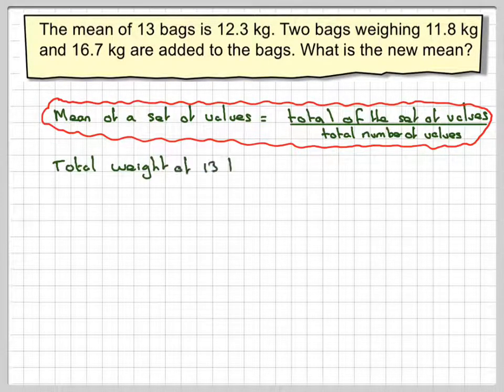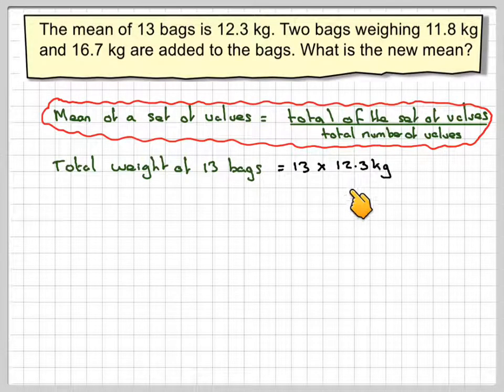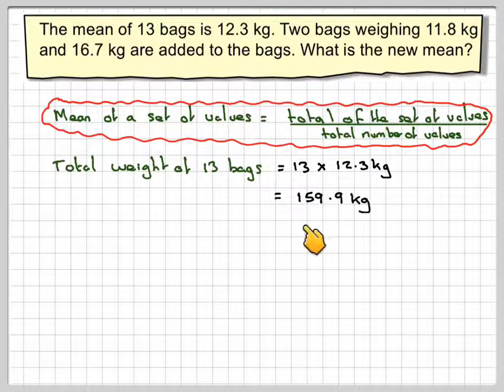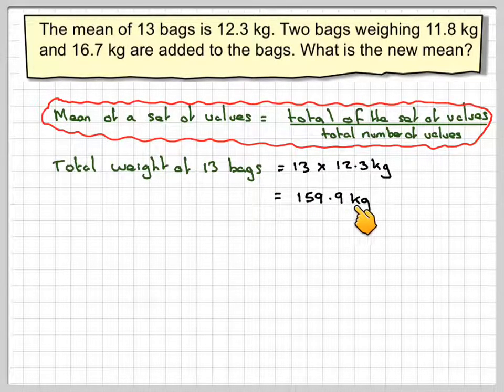The total weight of the 13 bags will be 13 times the mean. It's like rearranging this formula here, so it's 13 times 12.3, which gives me 159.9 kilograms.